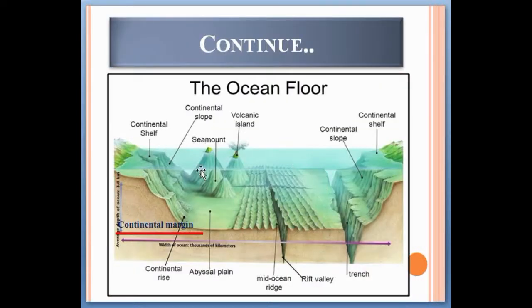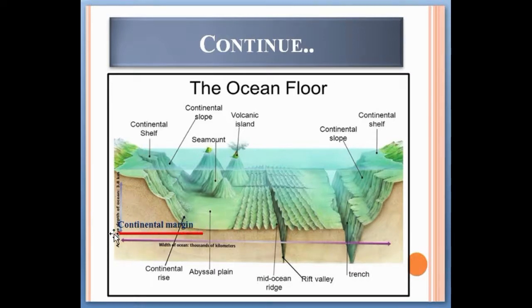This photograph shows the continental shelf, continental slope, continental margin, and continental rise. The continental shelf is the shallow part of the ocean connected with the land. The continental slope is situated between the continental shelf and deep ocean basins. The continental margin is the distance from the coast to the abyssal plain, shown here in red, and the continental rise is the point where the deep ocean basin begins.